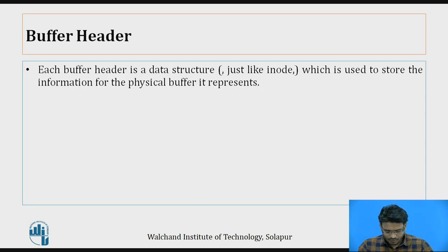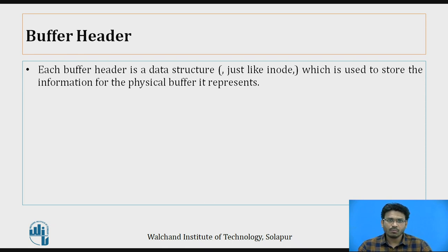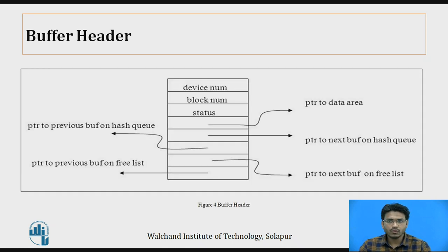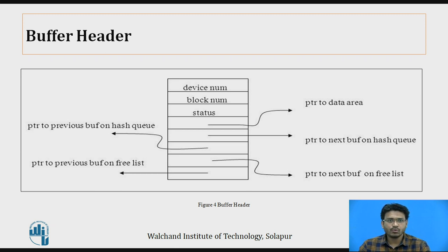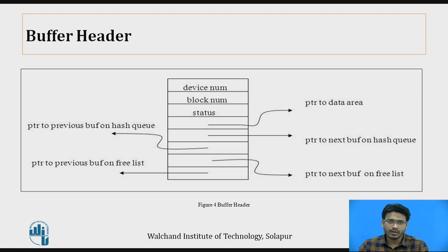The buffer header is a data structure, similar to the inode, used to store information for the physical buffer it represents. The buffer header contains: device number, block number, status, pointer to the data area, pointer to the previous buffer on a hash queue, pointer to the next buffer on the hash queue, pointer to the previous buffer on the free list, and pointer to the next buffer on the free list. These are the different attributes stored in the buffer header.